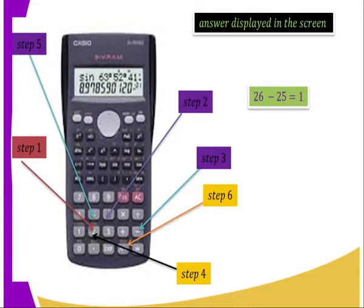How do we use the calculator? We have steps that we are required to follow. For example, we have 26 minus 25. Step one, you press 26. Step two, you press the subtraction functional key. Then you press equals, and you get a display on the screen. You get the answer as 1.